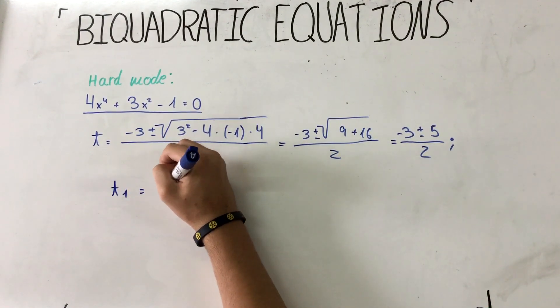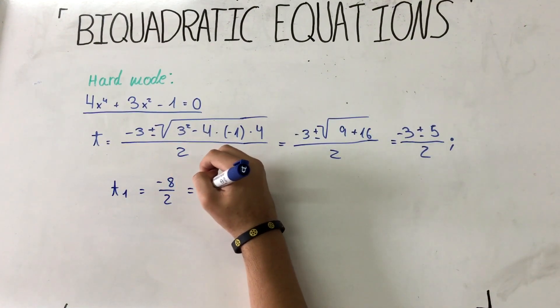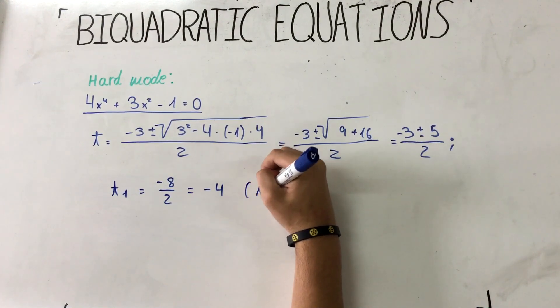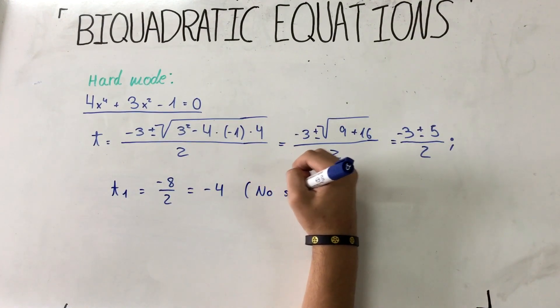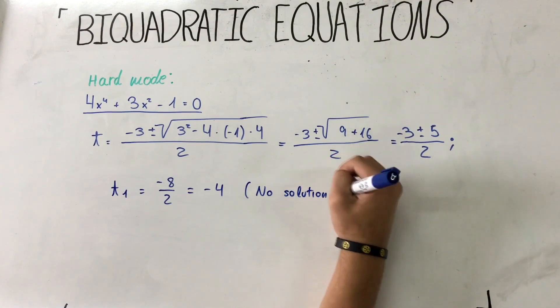So t1 equals minus 8 divided by 2 equals minus 4, so there is no solution. Good job.